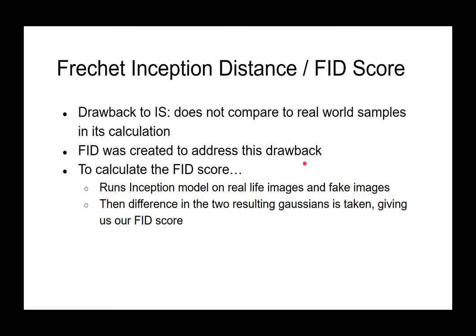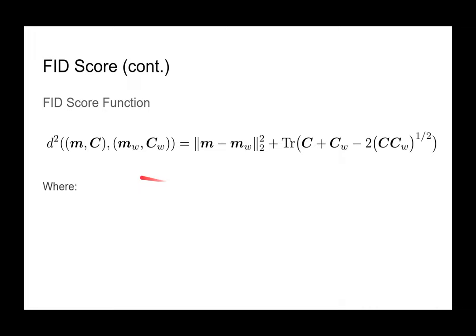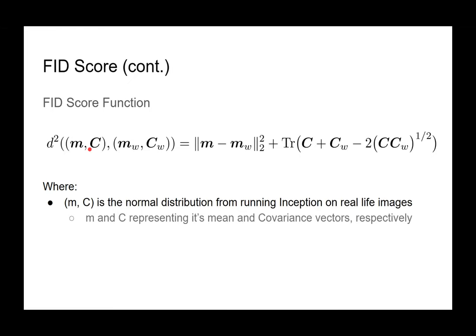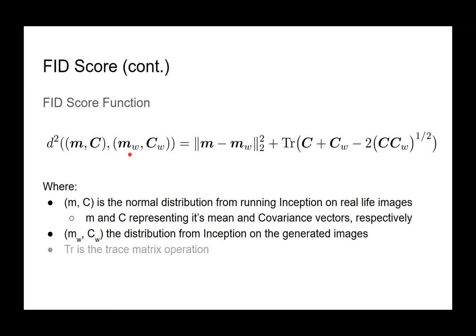The FID formula compares the distribution of inception features on real images versus generated images. The trace term (Tr) appears due to the matrix math for comparing two Gaussian distributions. In summary: higher Inception Score is better; lower FID is better. Now Chandra will explain how these scores are used in evaluating GLIDE.